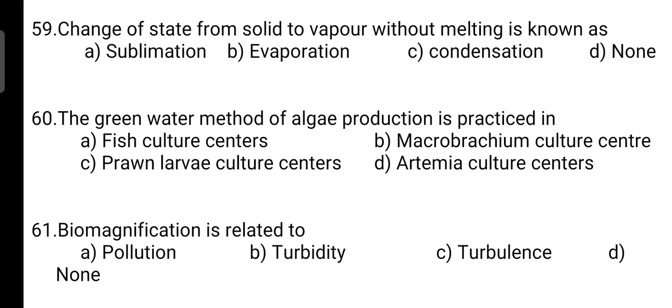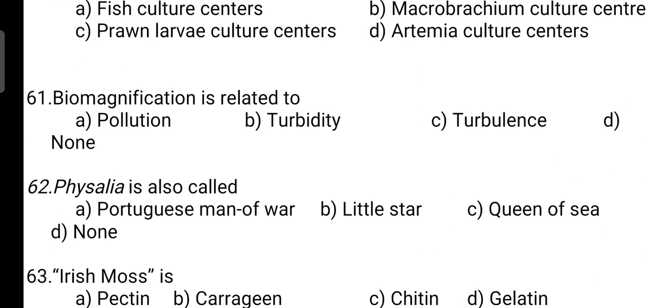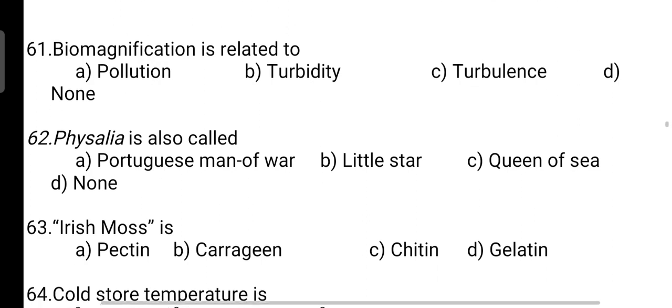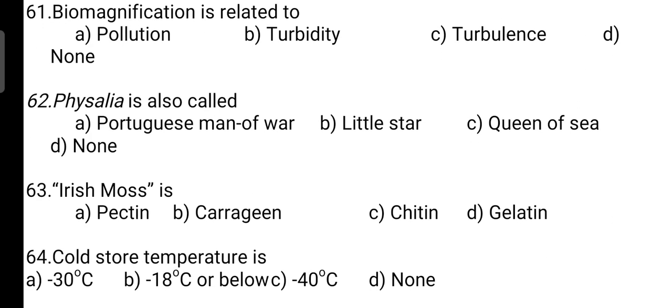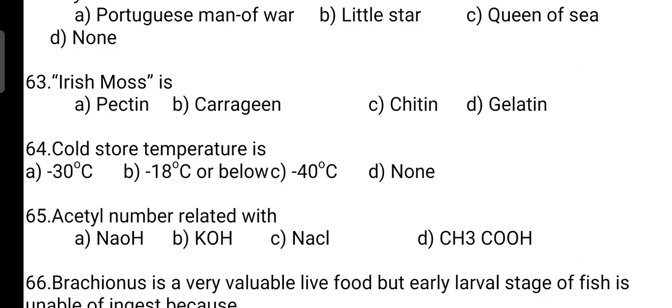Green water method of algae production is practiced in: correct answer is Option C — it is practiced in prawn larvae culture centers. Biomagnification is related to: correct answer is Option A — it is pollution. Physalia is also called: correct answer is Option A — it is also called Portuguese man-of-war. Irish moss is a: correct answer is Option B — it is a carrageenan.